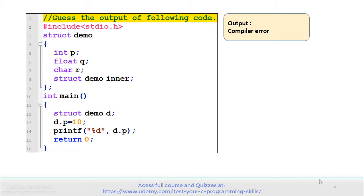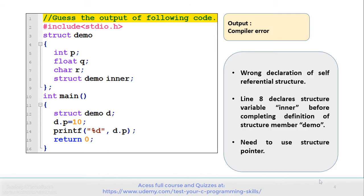Let's understand why we are getting a compiler error for this program. There is a wrong declaration of a self-referential structure. On line number 8, it declares structure variable inner before completing the definition of structure demo, so there is a compiler error. There is a need to use a structure pointer rather than creating a structure variable on line number 8.